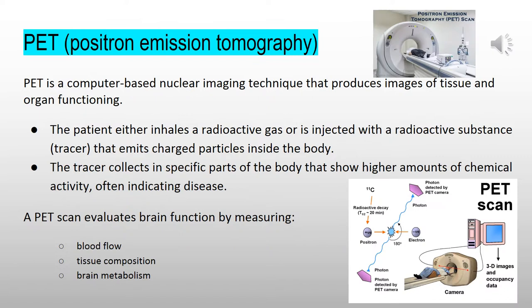PET stands for positron emission tomography. The patient can either inhale a radioactive gas or be injected with a radioactive substance, also known as a tracer, which emits charged particles inside the body. The tracer then collects into specific parts of the body that have higher amounts of chemical activity, often indicating disease. On a PET scan, areas of disease show up as bright neon spots.